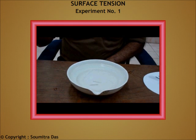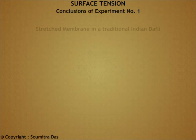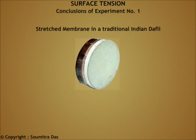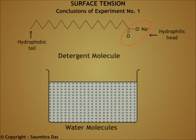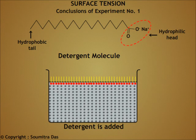We can draw the following conclusions from the experiment. The liquid surface behaves like a stretched membrane having tension. When detergent solution is added to the surface of the water, this surface phenomenon does not work anymore because the water molecules on the surface are replaced by detergent molecules.